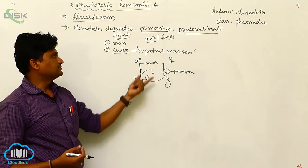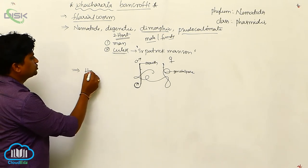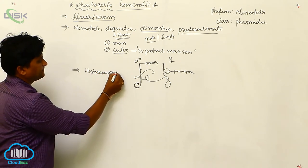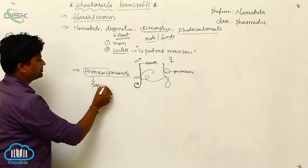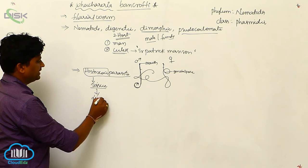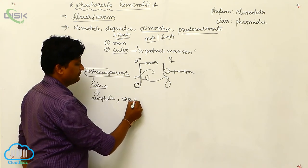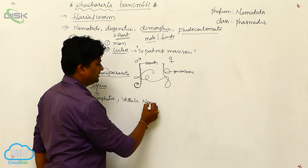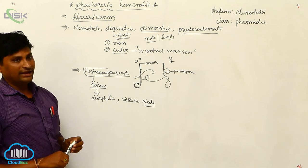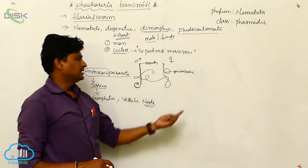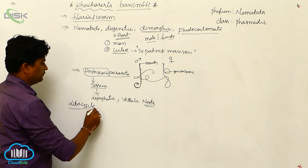These are the structures of male and female, which is why we consider Wuchereria bancrofti a dimorphic parasite. It is also called a histozoic parasite, meaning it lives in the tissues. The most affected tissues are the lymphatic tissue, lymph vessels, and lymph nodes. This finally leads to the disease filariasis, also known as elephantiasis. Now let us go to the life cycle of Wuchereria bancrofti.